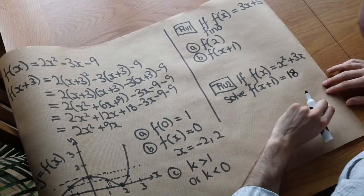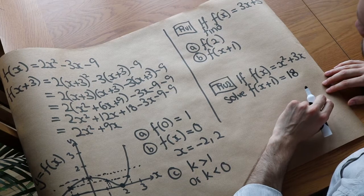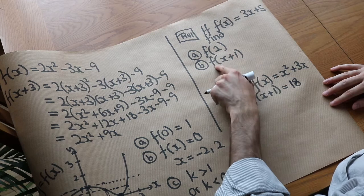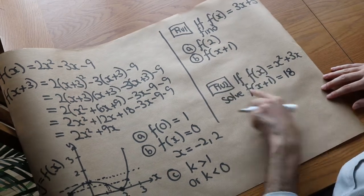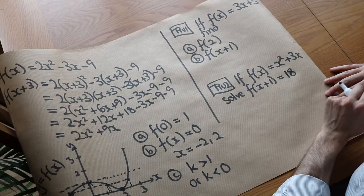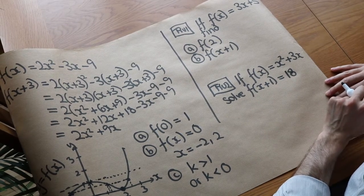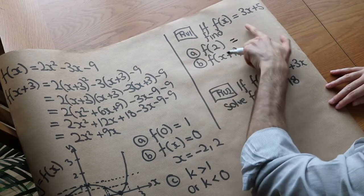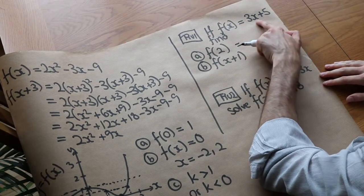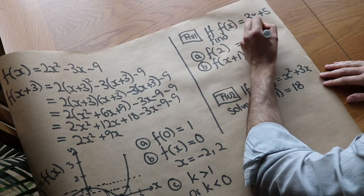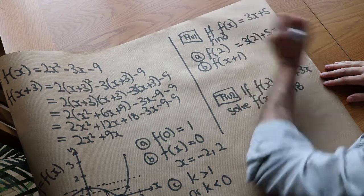Now I've got two final test-your-understanding questions. If f of x is 3x plus 5, find f of 2 and f of x plus 1. For f of 2, we substitute every instance of x for 2: it's just 3 times 2 plus 5, which is 6 plus 5, which is 11.